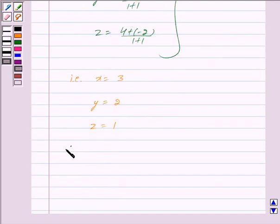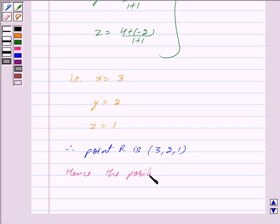Therefore, we have point R is (3, 2, 1). Hence the position vector of R is given by 3i cap plus 2j cap plus k cap.